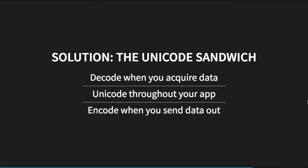The solution proposed by Ned Batchelder — and I suggest watching his talk if you have time — is to always follow rigorously this method: when you get data that's not Unicode, decode it immediately. Then throughout your program you deal uniquely with Unicode data. When you're done and you're sending it off to someone else, you encode it again. This is sometimes described as a kind of serialization, and you can view it as layers of abstraction.